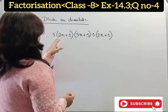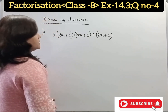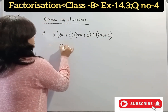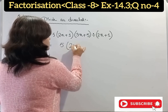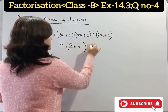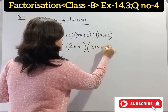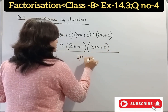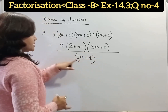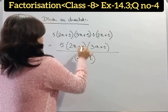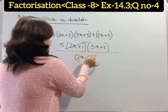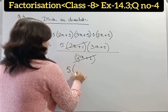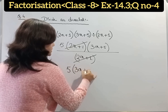From the first question: 5 times (2x + 1) times (3x + 5) divided by (2x + 1). Now, (2x + 1) will get cancelled. So our answer is 5 times (3x + 5).